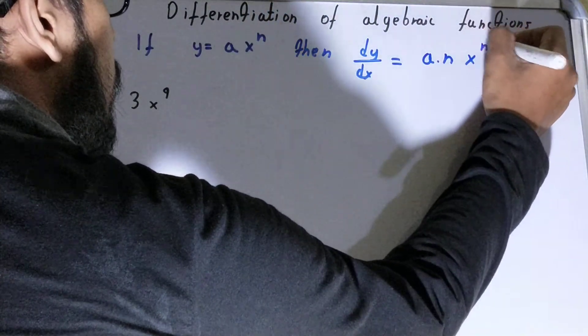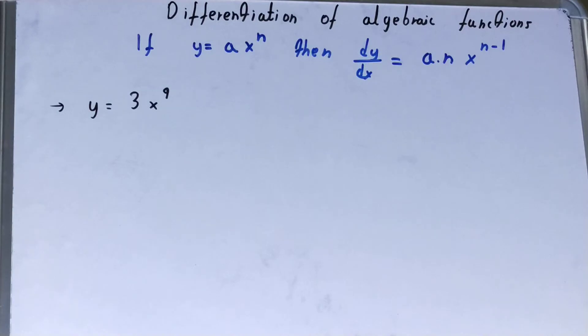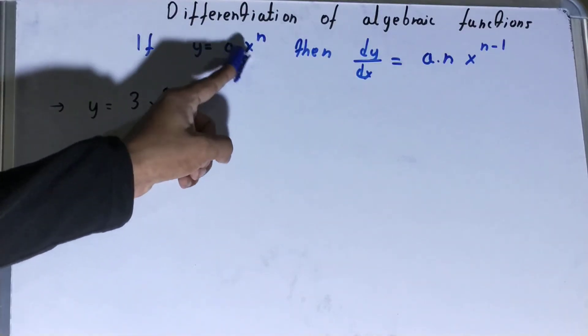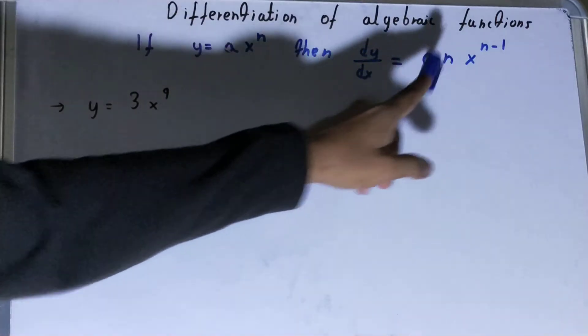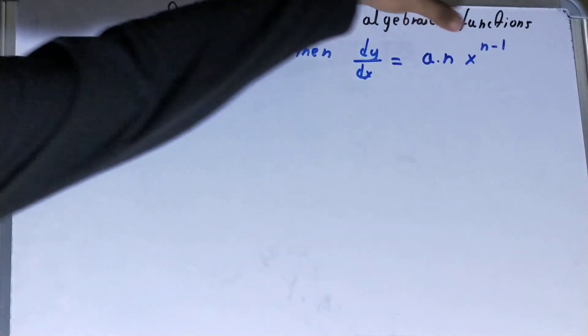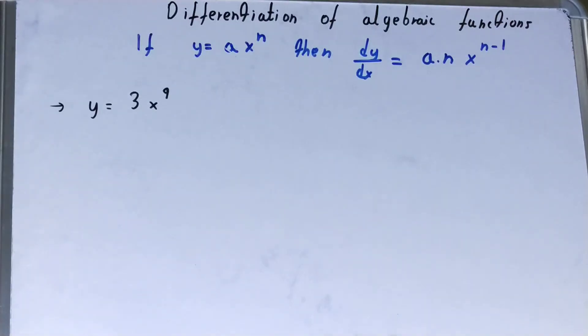That means if you see this power, this power will be multiplied with the coefficient, and in the power it will be subtracted by 1. Now let's come to the example to understand the concept.